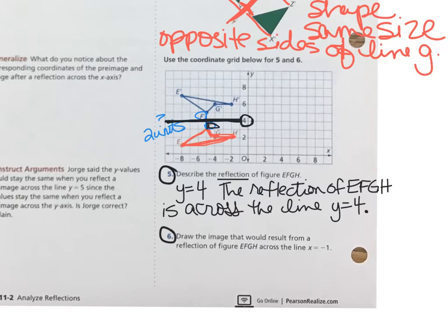Notice now that when I draw in Y equals 4, that point F is one unit away and point F prime is also one unit away. That is what confirms for us that Y equals 4 is that line of reflection because F and F prime are the same distance away from that line.